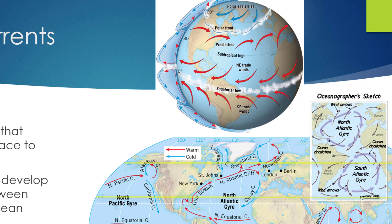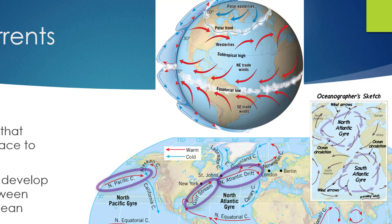Let's pick on three currents relatively close to the United States, namely the North Pacific current, the Gulf Stream, and the North Atlantic current. All three of these currents exist predominantly between the latitudes of 30 degrees and 60 degrees, and all three of these currents move from west to east, just like the westerlies.